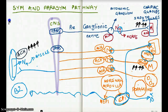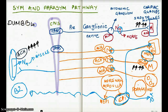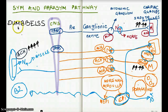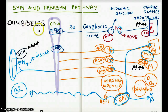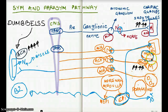The mnemonic is DUMBELS: D for diarrhea — GI motility increases due to muscarinic receptors; U for urination, same reason; M for miosis — ciliary muscles stimulated by muscarinic receptors; the first B for bradycardia; the second B for bronchodilation; E for excitation of skeletal muscle; L for lacrimation — all glands are stimulated; S for sweating; and the final S for salivation.